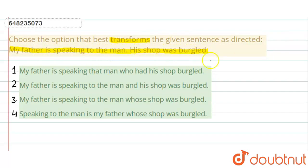See, here we have 4 options. The first option is: My father is speaking to that man who had his shop burgled. So see, our second clause, that man who had his shop burgled, is not in passive. So this should be in passive, which is not our answer.